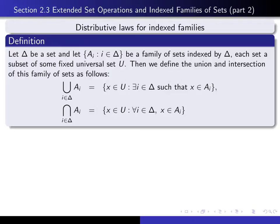We first recall some definitions from the previous video. If we let delta be any set, and we let a sub i, such that i is an element of delta, be a family of sets indexed by delta, then we can define the union and the intersection of this entire family. The union is the set of all x in our universe such that there exists an i in delta such that x is in a sub i, and the intersection is the set of all x in our universe such that for every i in delta, x is in a sub i.